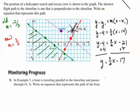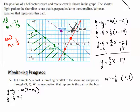So, m will have to be negative 2 thirds, and our point will be 9, 3. So, let's put that all together. y minus y1 is equal to m times x minus x1. y minus y1, we have y minus 3, is equal to negative 2 thirds times x minus 9.